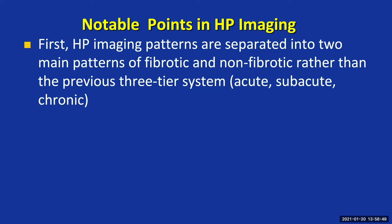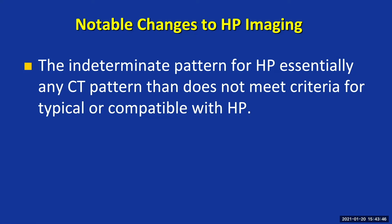So instead of trying to subcategorize hypersensitivity pneumonitis using temporality, we're really going to use morphology — specifically the presence or absence of fibrosis. And if you do have fibrosis, now that we know antifibrotics seem to work in all progressive types of pulmonary fibrosis, you have that treatment regimen available as well, though this talk is primarily geared toward diagnosis.